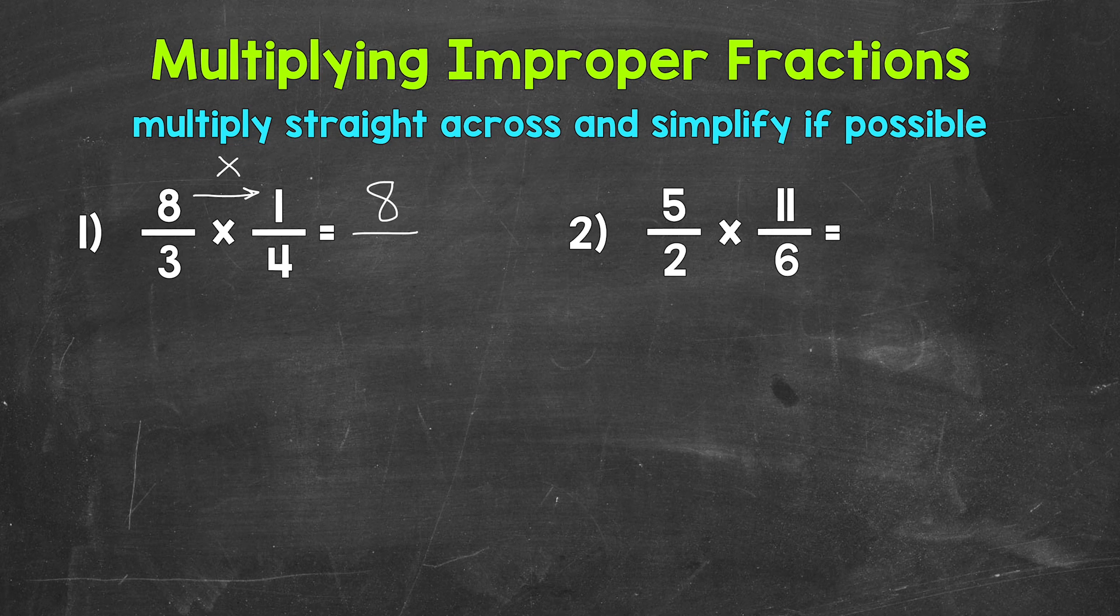Now for the denominators. 3 times 4 is 12. We end up with 8 twelfths, which is correct, but we can simplify. The greatest common factor between 8 and 12 is 4. Let's divide 8 and 12 by 4.